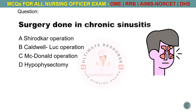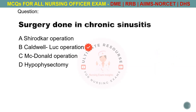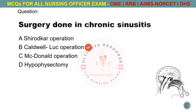Surgery done in chronic sinusitis. Options are A. Shirodkar operation, B. Caldwell-Luc operation, C. McDonald operation, D. Hypophysectomy. The answer is B. Caldwell-Luc operation. Let's explore the other options. The Shirodkar operation and the McDonald operations are done for the correction of incompetent cervix. Whereas hypophysectomy is a surgical procedure that removes the pituitary gland.